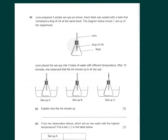Question 40: June prepared three similar setups, each flask sealed with a tube containing a drop of ink at the same level. The only way for air in the flask to move is through the tube. The flasks were placed at different temperatures A, B, and C. After 10 minutes, the ink moved up in all three setups. Explain why the ink moved up.